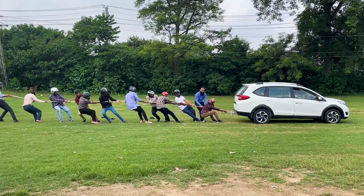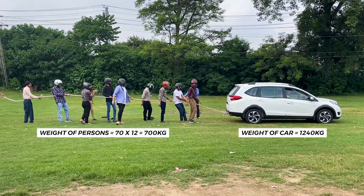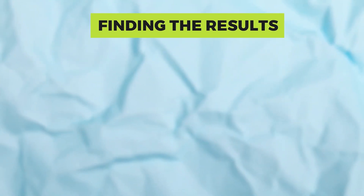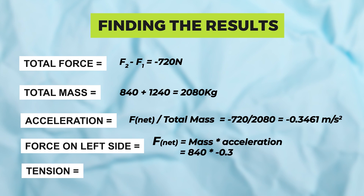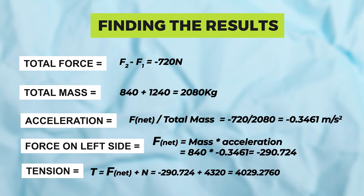This time we can see 12 persons on the left side pulling the rope. The car is trying to accelerate but the force of the 12 persons is greater, so it is being pulled by them. Total force: F2 minus F1 equals minus 720 N. Total mass: 840 plus 1240 equals 2080 kg. Acceleration: minus 720 over 2080 equals minus 0.3461 m/s². Force on the left side: mass 840 times minus 0.3461 equals minus 290.724 N. Tension T equals F_net plus N, where F_net is minus 290.724 and N is 4320, giving total tension of 4029.276 N.